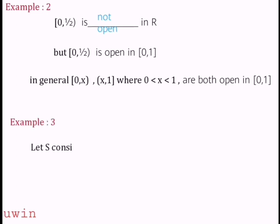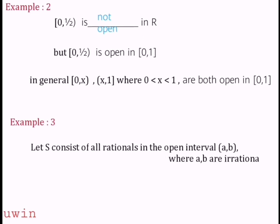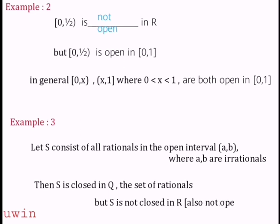Example 3: Let S consist of all rationals in the open interval (a, b), where a and b are irrational. The open interval (a, b) is open. S is closed in Q — the rational set — because Q is closed in Q. But S is not closed in R, the real line. Also, S is not open in R. Note: Q itself, as a union of interval forms, is not open in R.